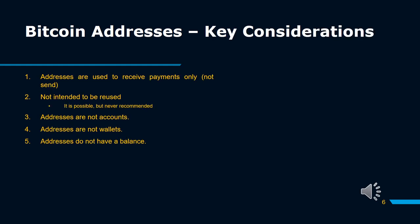Bitcoin addresses — key considerations: 1. Addresses are used to receive payments only, not to send. Bitcoin addresses are only really used when receiving Bitcoin. Unlike our real-world addresses, they are only meant to be used once. The idea is that for each Bitcoin transaction, receivers will generate a unique, single-use address to provide to senders. 2. Not intended to be reused. It is possible, but never recommended. You can't return to sender — one curious aspect of Bitcoin is it doesn't actually track from where transactions are sent. Unlike a typical letter which includes a return address, Bitcoin transactions do not.